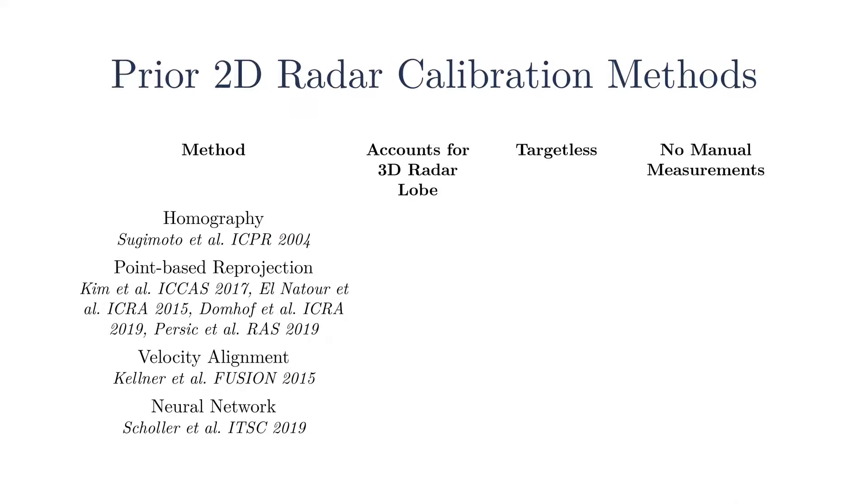Most radar extrinsic calibration algorithms are for 2D radars. In this table, we summarize the constraints of some recent 2D radar extrinsic calibration methods. Homography methods provide an accurate method of calibration, but they assume that the radar measurement is entirely 2D and require specialized targets. Point-based reprojection methods account for the 3D nature of radar measurements, but require a series of specialized targets.